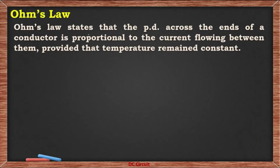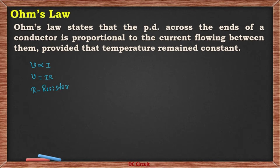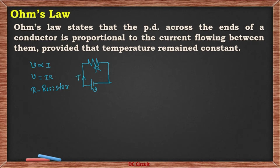Let us begin with Ohm's law. According to Ohm's law, the applied voltage V is directly proportional to current I, where V equals I into R. Here R is the proportionality constant, which we call the resistor. Let us represent this as a circuit with resistance R, applied voltage V, and the closed path followed by current I.